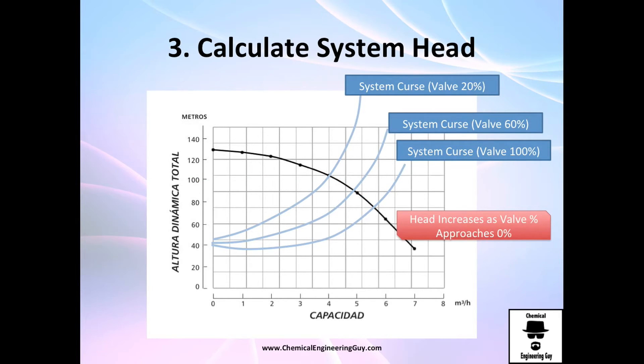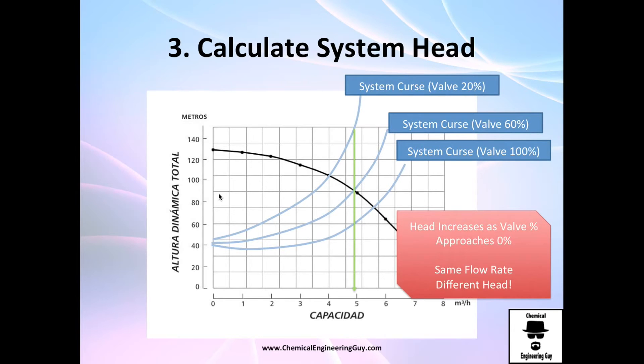As head increases, the valve approaches zero, and that makes sense - as you close even more and more, you're going to generate more friction. So let's make this analysis. Normal operation of plants need a specific gallons per minute or volumetric flow, so this line is going to be the one that won't change.